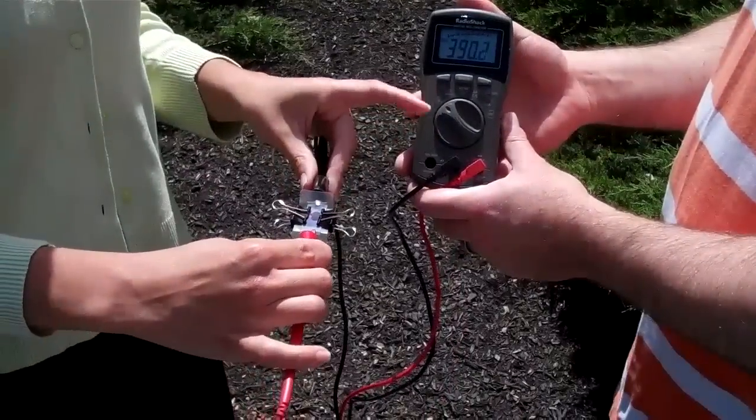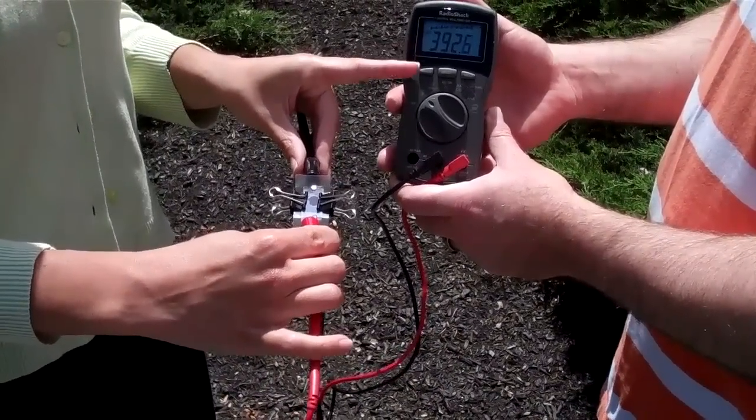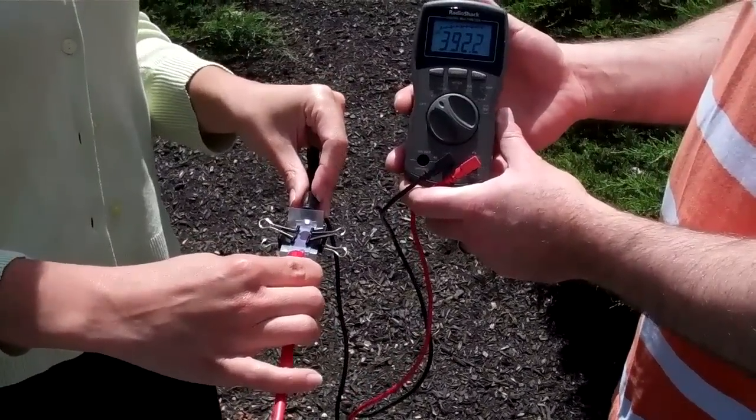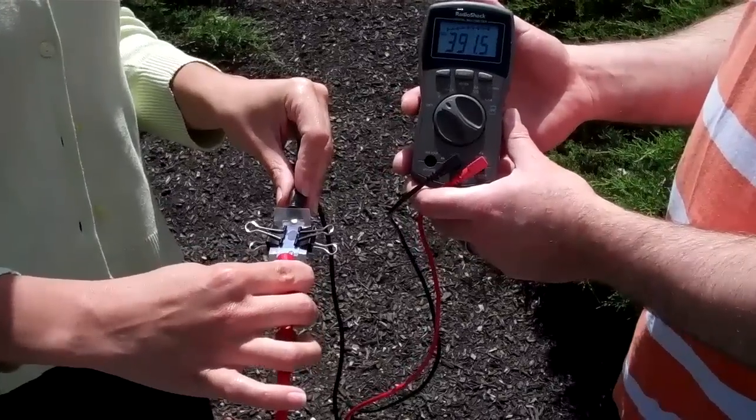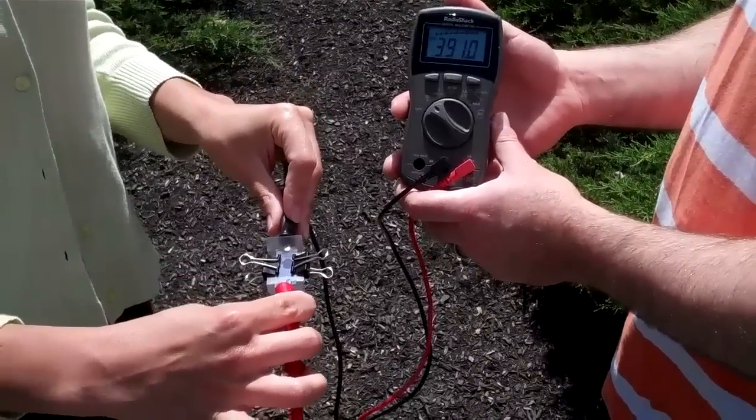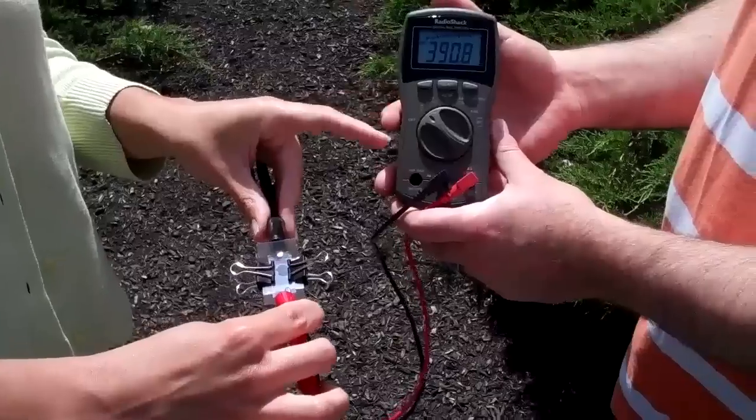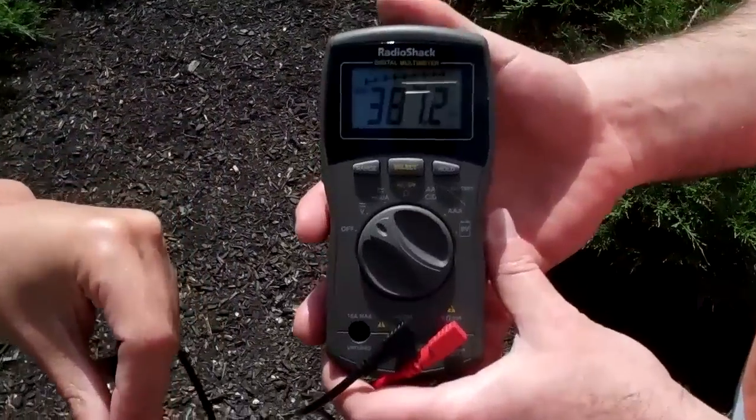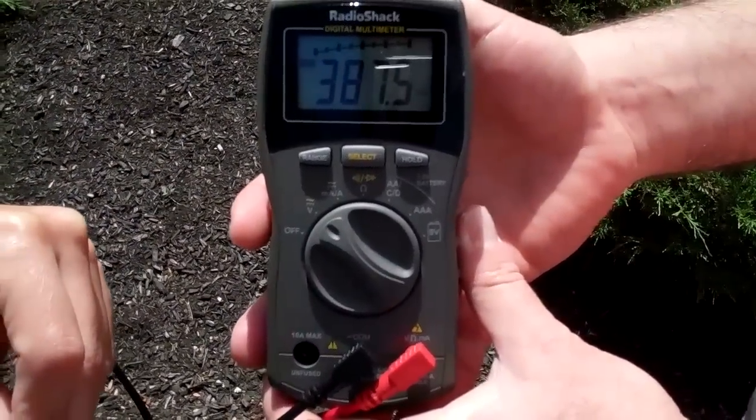you then have your student switch the multimeter to the voltage setting. At this point, your student will be able to see the measurement in millivoltage. So for this solar cell, we have a millivolt reading of 390, approximately 390, with a little bit of variation. Congratulations! At this point, your students will have successfully made the dye-sensitized solar cell.